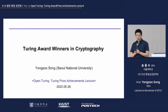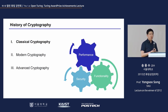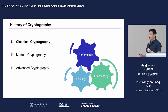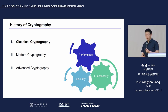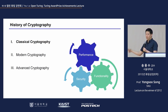We want to go over the history of cryptography. I think there are three major phases: classical, modern, and advanced cryptography. We are currently in the era of advanced cryptography. The winners of the Turing Award for cryptography are those who created a new paradigm or have made great achievements in the area of cryptography technology.